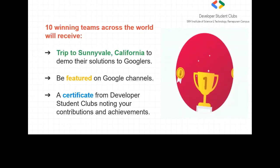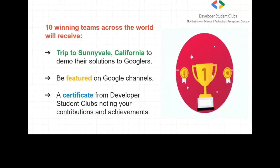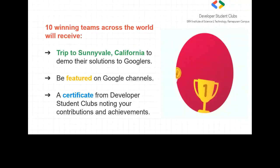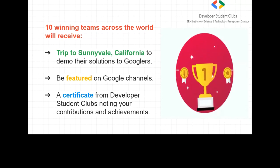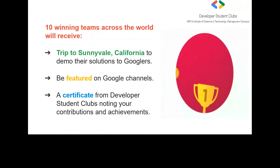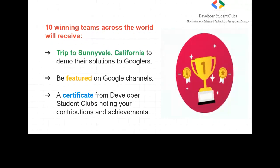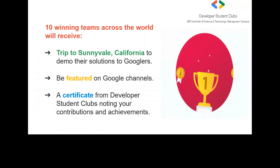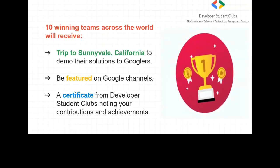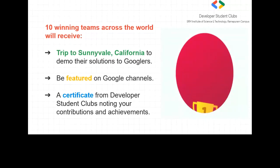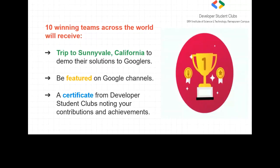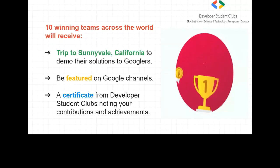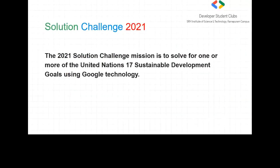The perks of participation in the Solution Challenge: 10 winning teams across the world will receive a trip to Sunnyvale, California to demo their solution to Googlers. They will be featured on Google channels. A certificate from Developer Student Clubs noting your contribution and achievements will be given. In Solution Challenge 2021, the mission is to solve one or more goals of the United Nations Sustainable Development Goals using Google technologies. There are seven goals listed. You can watch more about this on our YouTube channel.